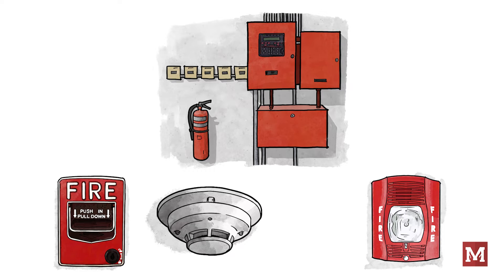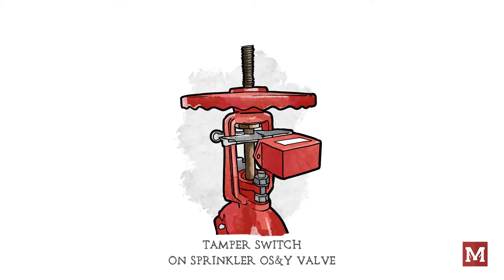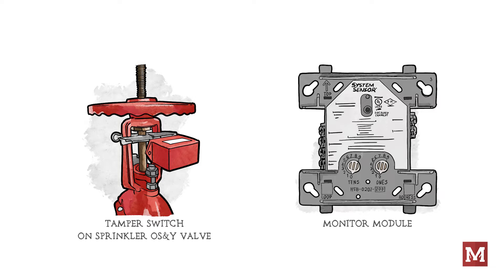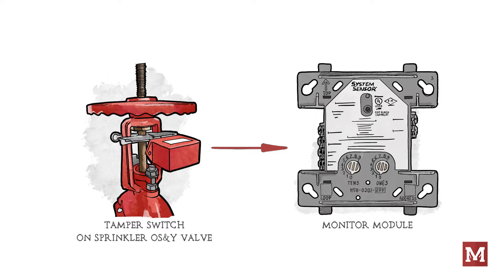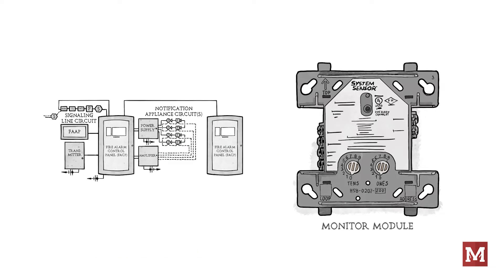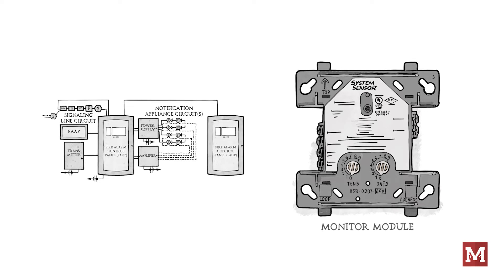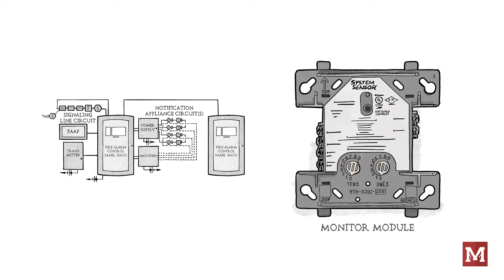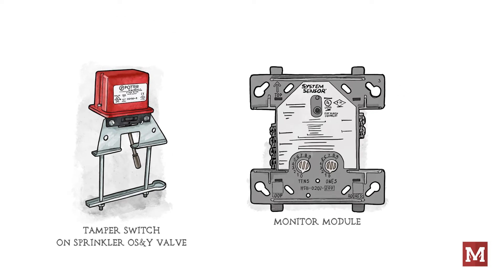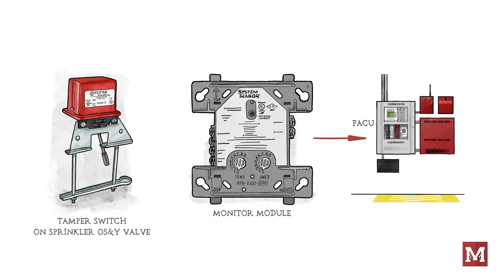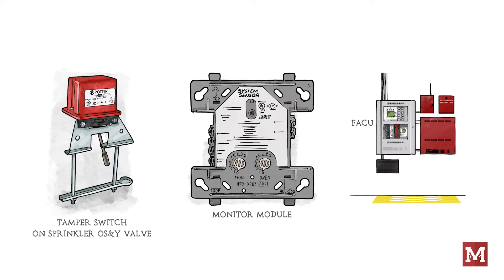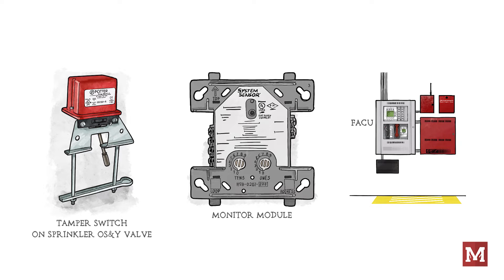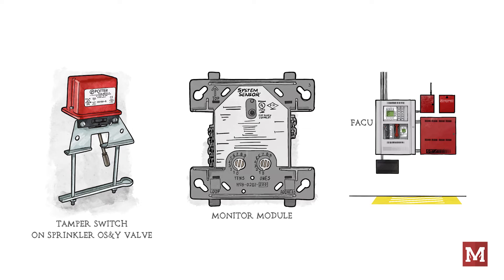Let's look at a common example. A tamper switch on a fire sprinkler system is designed to detect any unauthorized tampering or damage to the sprinkler system. A monitor module in a fire alarm system supervises this tamper switch by monitoring its status and providing an alert to the fire alarm control panel if the switch is activated. If someone were to tamper with or damage the sprinkler system, the tamper switch would activate and send a signal to the monitor module, which would then alert the panel. This is usually reported as a supervisory condition — the horns and strobes don't activate, but there's a buzzing sound at the panel and it reports out to its supervising station.